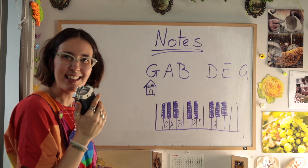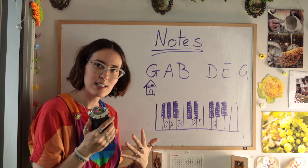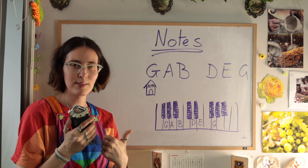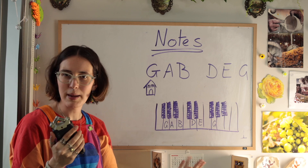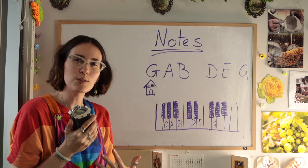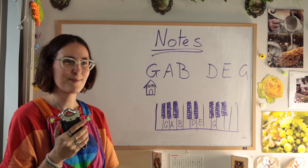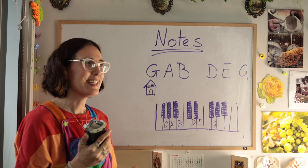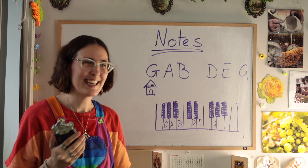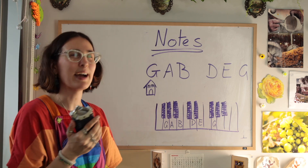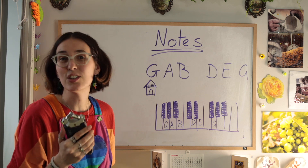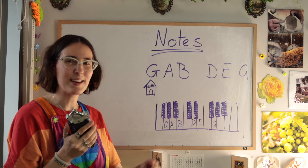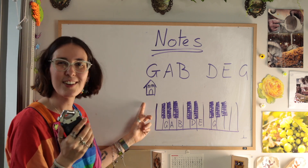I drew a little house under the G because G is our home note. This is the note that we're going to start on to set the tone for the piece of music, and it's also the note we'll return to to make the piece sound finished. If you want to think of it like a journey: you start your day in your house, you get up, you go about your day — you might go to school, go to work, walk the dogs, potter around in the garden — and once the day is done, you return home.